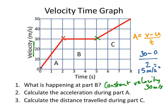Acceleration is the rate that speed changes at — how much does the speed change every second? Each second it speeds up by 15 metres per second. After 0 seconds it was going 0, after 1 second it would have been going 15, and after 2 seconds it would have sped up by another 15, now going 30 metres per second.